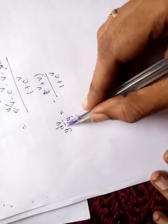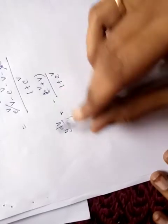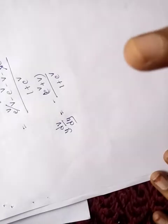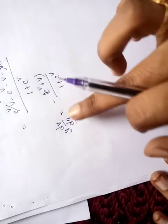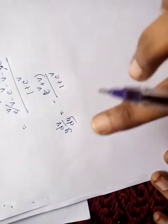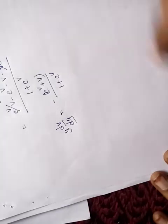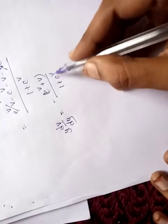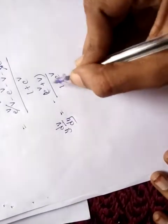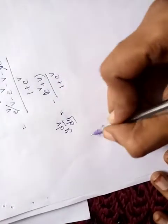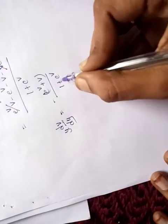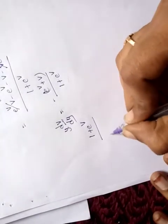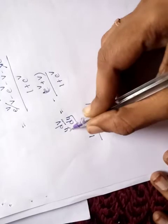Using variable separable form, we separate the v and y terms: (1 + e^v)/(e^v + v) dv = -1/y dy.